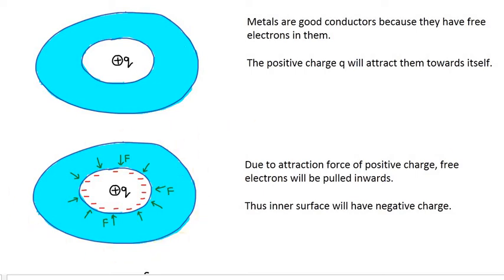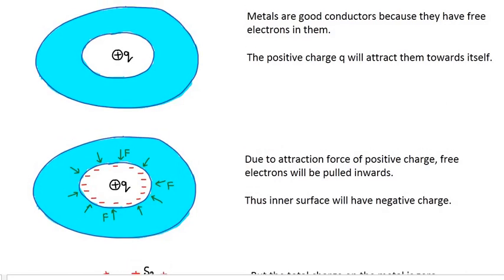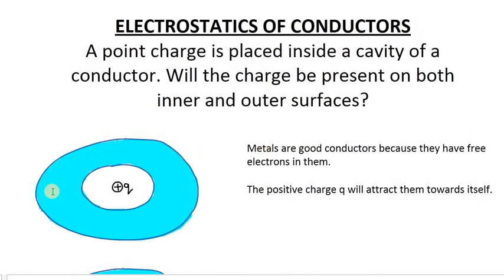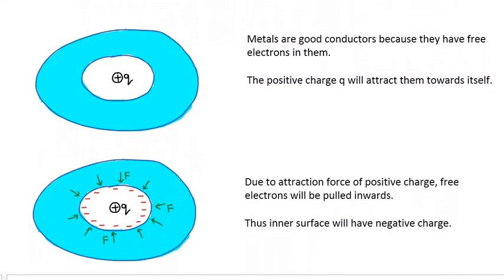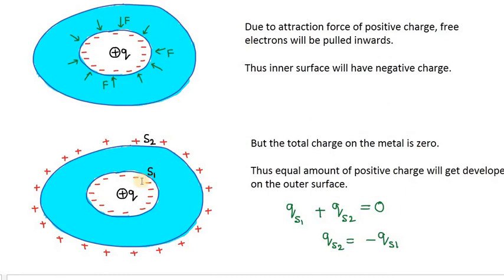Then what will happen to the outer surface — will there be any charge? In the beginning, the conductor is uncharged; no charge has been given to the conductor. The charge Q is present inside the cavity but is not in contact with the conductor, so the conductor is charge-free. The total charge on the conductor is zero, and it must always remain zero because of the law of conservation of charge. Therefore, if a certain amount of negative charge gets developed on the inner surface, then the same amount of positive charge must get created on the outer surface.